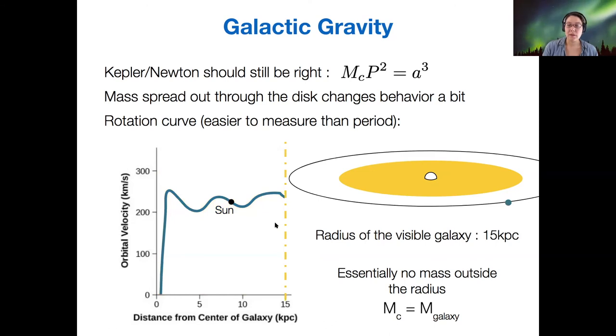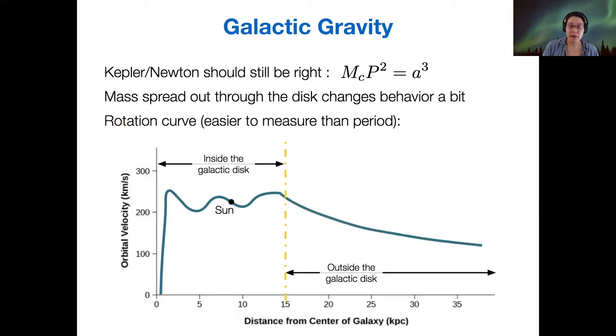So if we find something that orbits really far from the galaxy, and there are a few stars and globular clusters that orbit far from the disk, so we can use those objects. We can also use the clouds of gas that are at the very edge of the disk to measure the orbital velocity outside this area of disk that contains most of the glowing stuff. And when we do that...